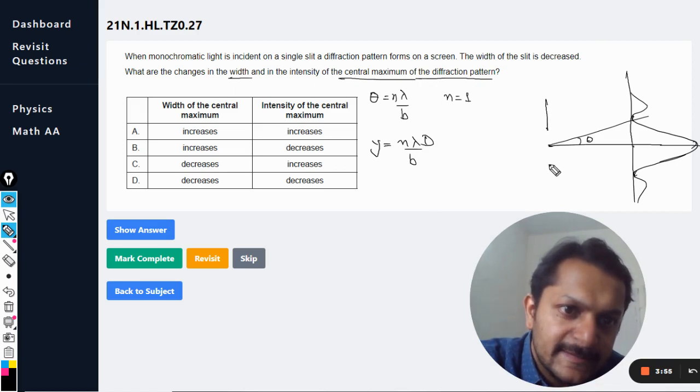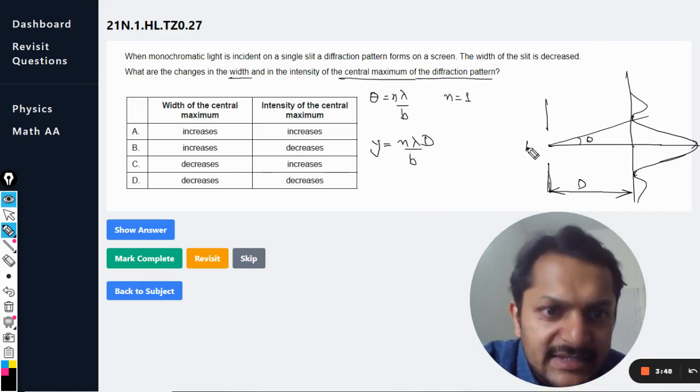And accordingly we can say y is n lambda divided by b into capital D, where this is the slit. So capital D is the distance between the slit and the screen, and b is the width of the slit.